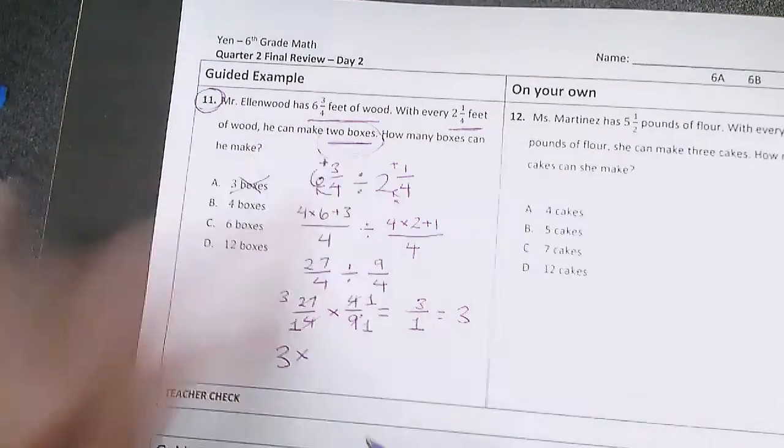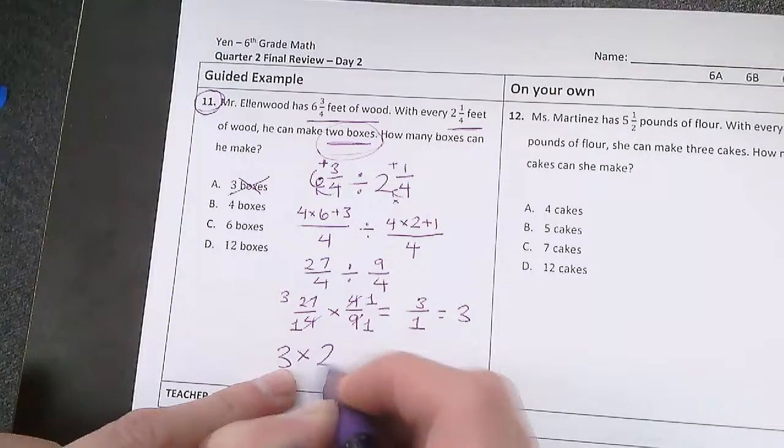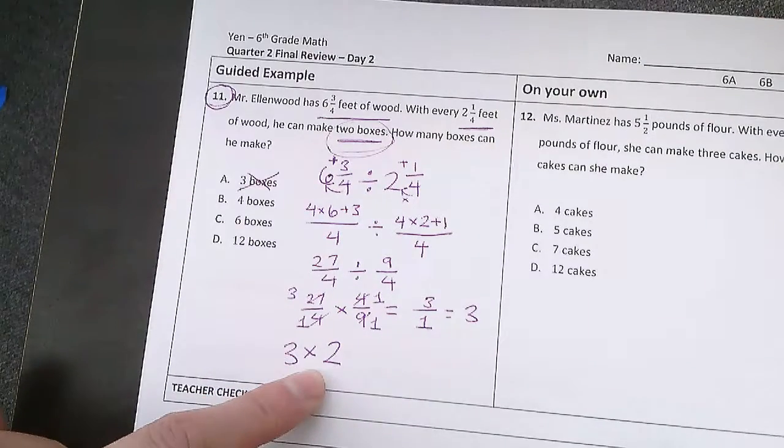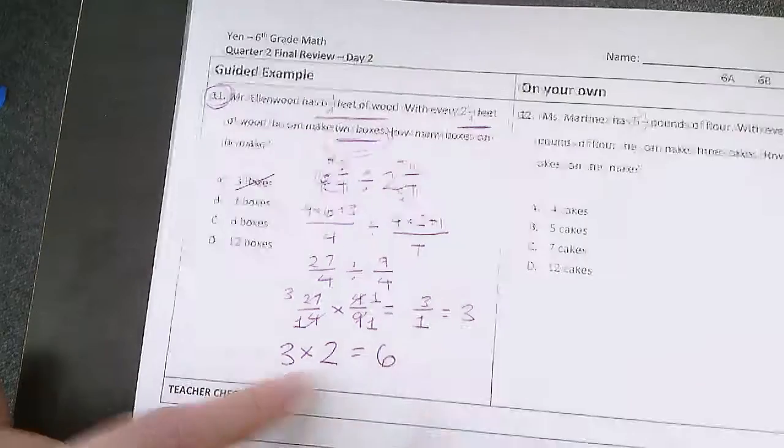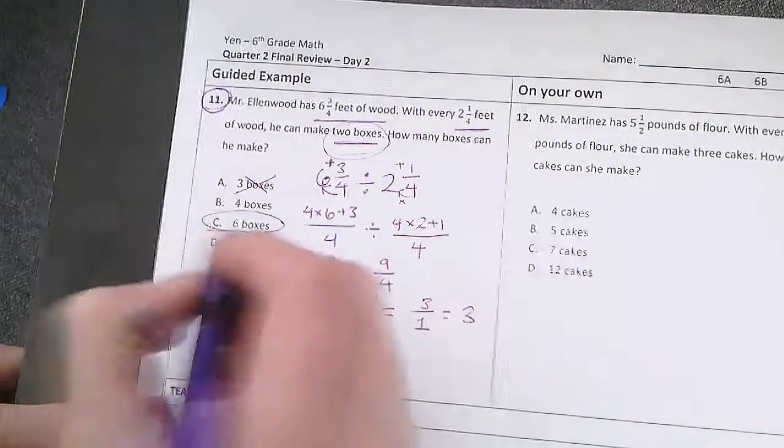So we have to multiply each section times the 2 boxes that we can make. And so 3 times 2 is 6. 6 boxes. There's our answer.